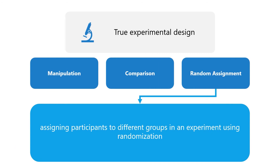If the researcher randomly assigns the children into two groups, then subjects will be equally distributed based on their prior behavior, on average.